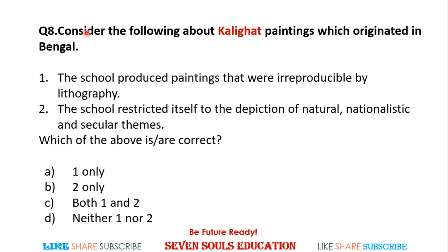Eighth question: Consider the following about Kalighat painting, which originated in Bengal — the school produced paintings that were irreproducible by lithography; the school restricted itself to depiction of natural, nationalistic, and secular themes. Which is or are correct? The answer is that both are incorrect — Kalighat paintings are actually reproducible by lithography.